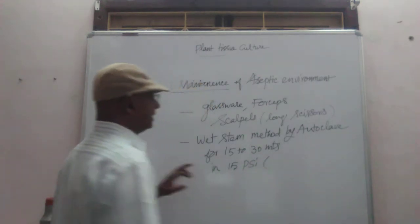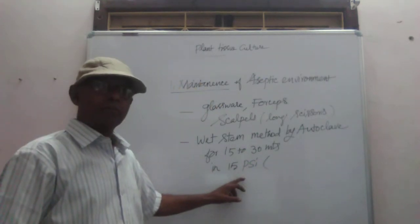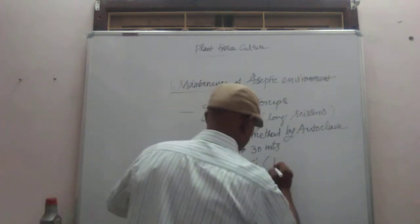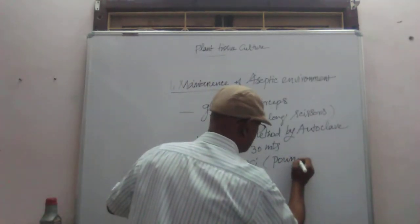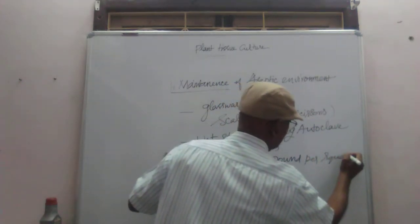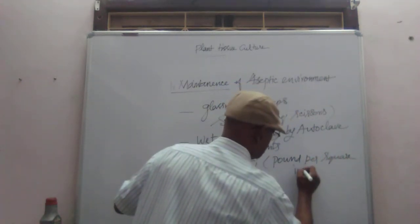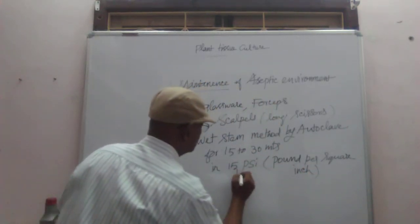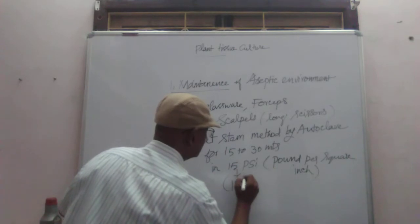PSI is the unit of measurement for pressure. What is psi? Pound per square inch. This is equal to 121 degrees Celsius.